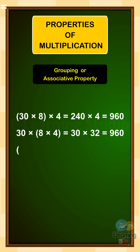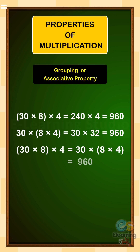So, bracket open 30 multiply 8 bracket close multiply 4 is equal to 30 multiply bracket open 8 multiply 4 bracket close. Both give us 960 as a result.